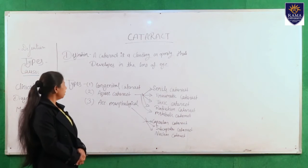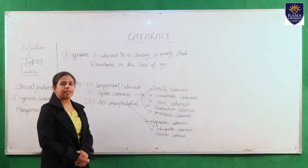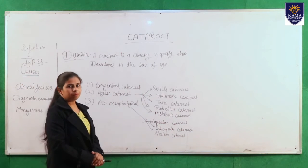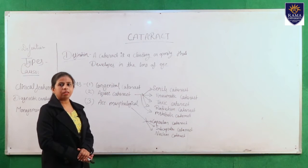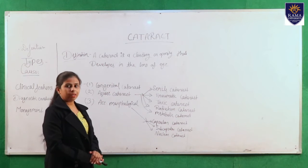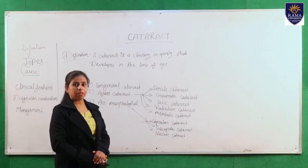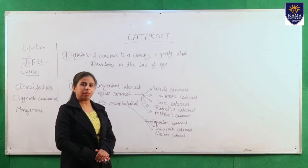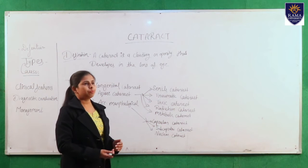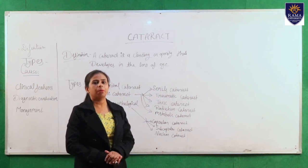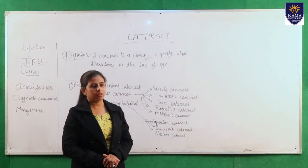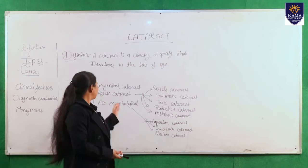In congenital cataract, the cataract occurs in the baby before birth, due to any genetic factor or due to any malformation.